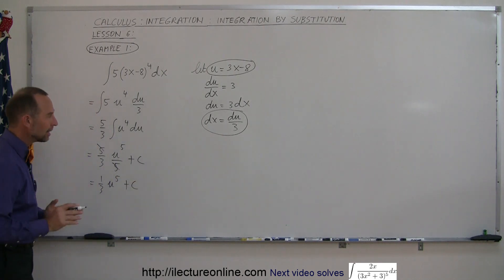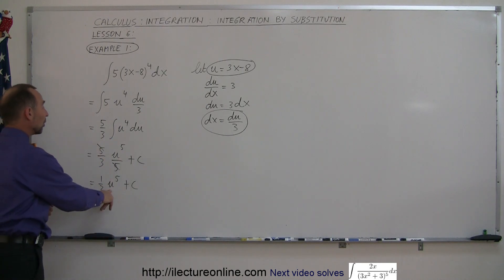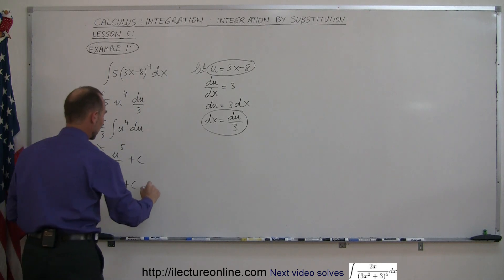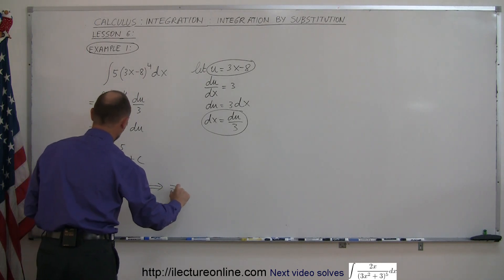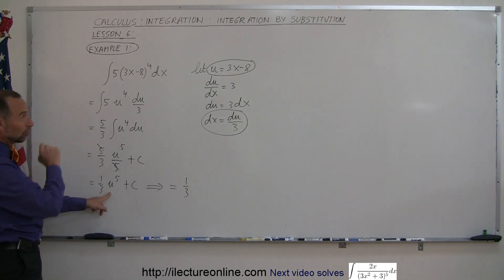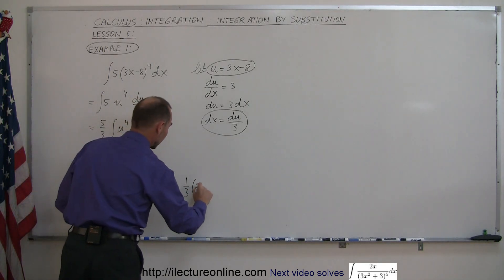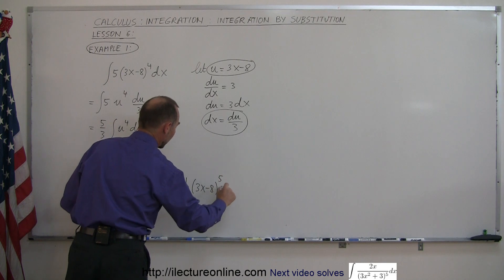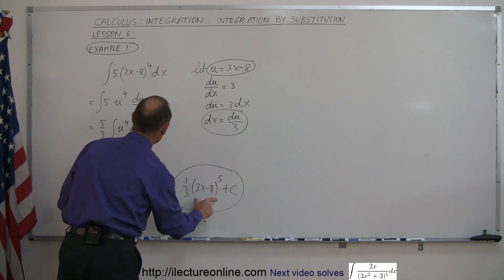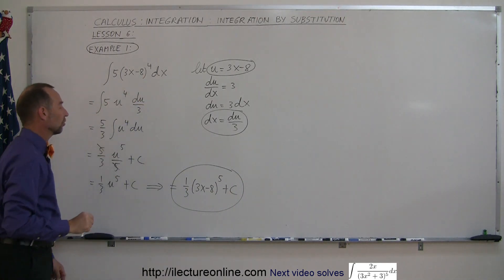Now we're not done yet because we want to substitute back what u was equal to in terms of x. Let's replace u by 3x minus 8. So we can say that this is equal to 1 third times u to the fifth, and u is 3x minus 8, so we can write 3x minus 8 to the fifth power plus a constant of integration. That here is the integrated form of the integral that you see up here.